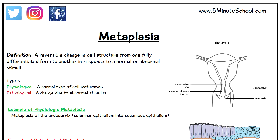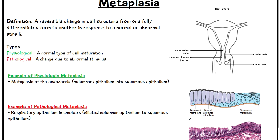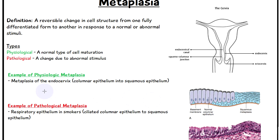We're going to talk about these in further detail with some examples. For physiological metaplasia, a good example is the metaplasia of the endocervix, which is a region in the vagina. This metaplasia occurs during puberty, and the type of change is columnar epithelium into squamous epithelium.